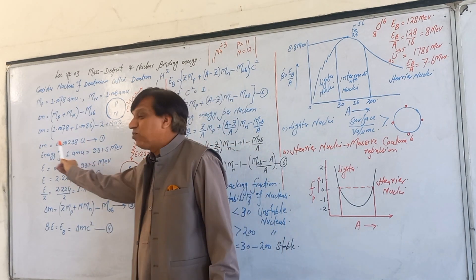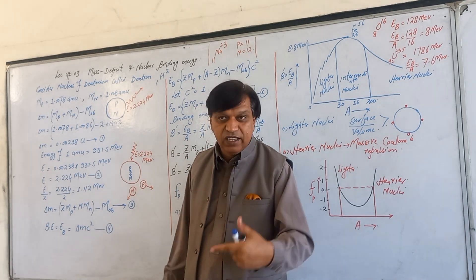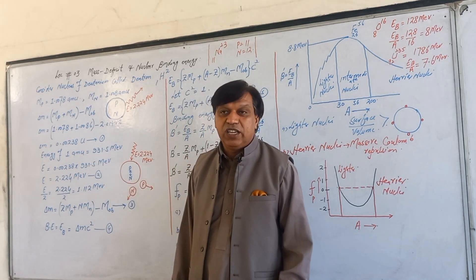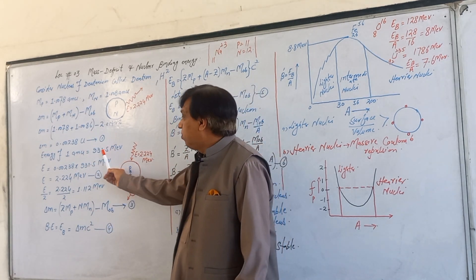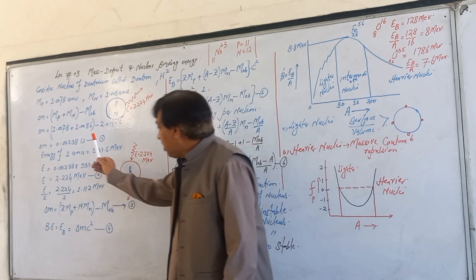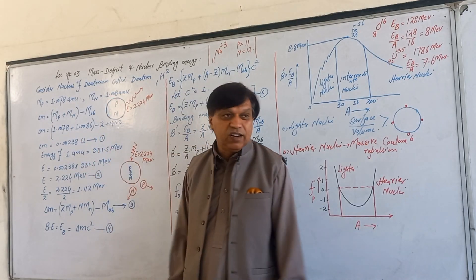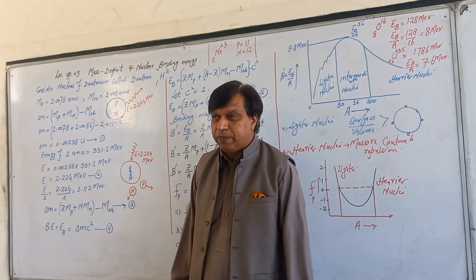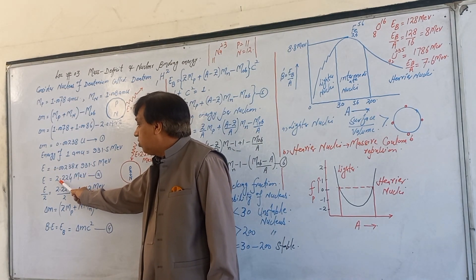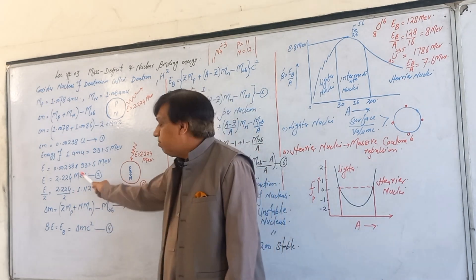We know that the energy of one atomic mass unit is equal to 931.5 MeV. So multiplying 0.00238 amu by 931.5 MeV gives us 2.224 million electron volts. This is the energy corresponding to the mass deficit of the deuteron.